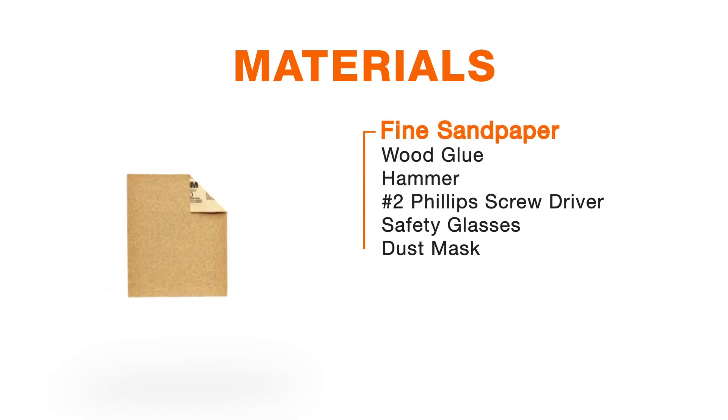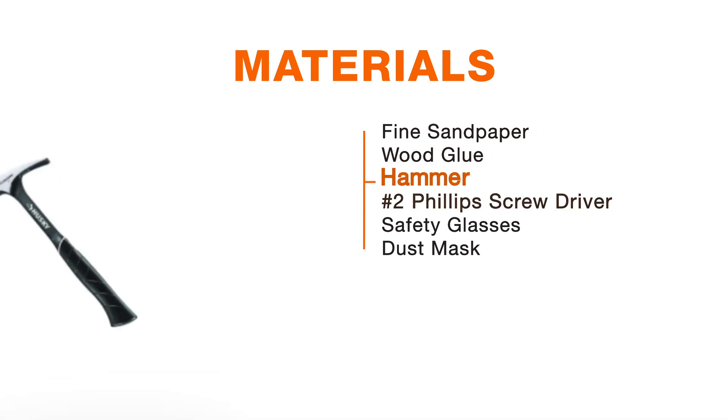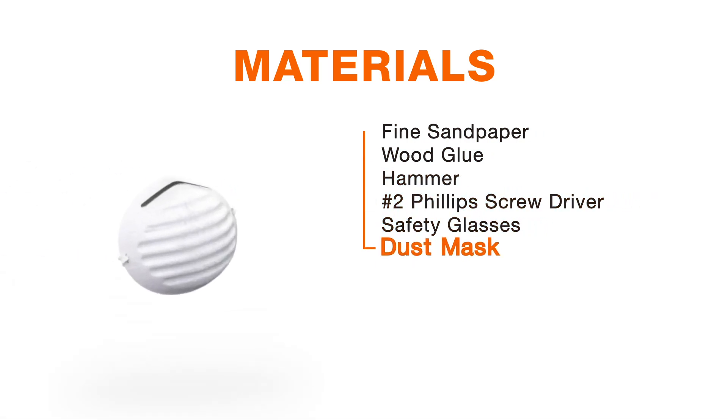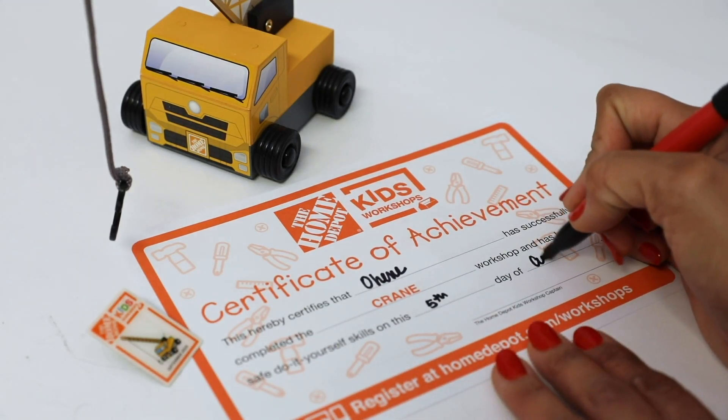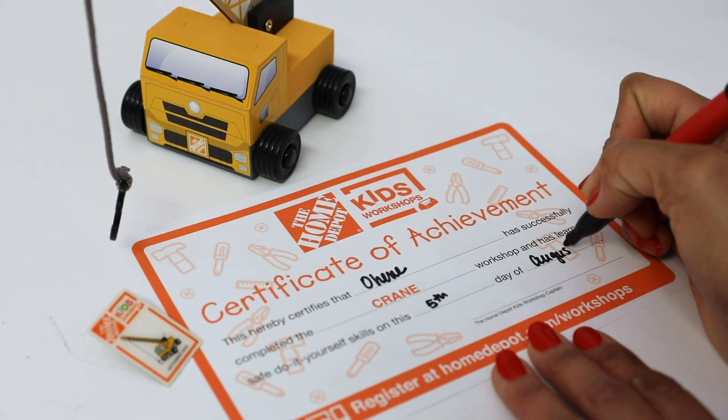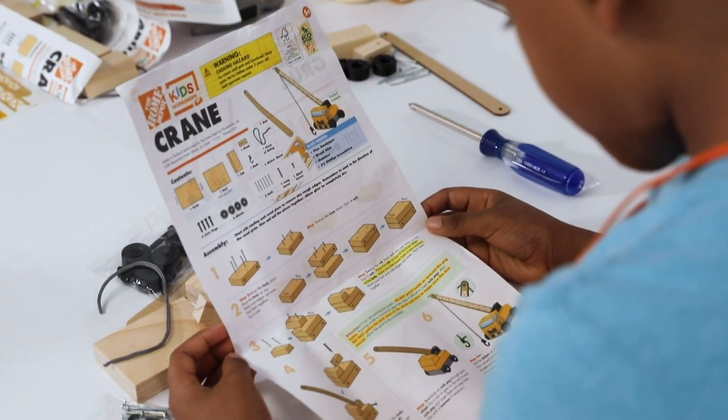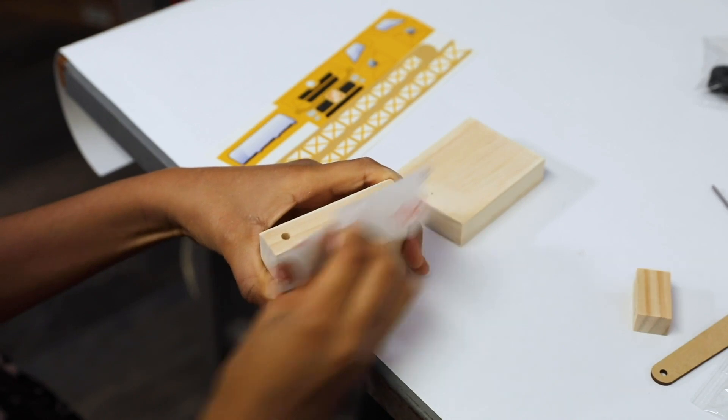You'll also need fine sandpaper, wood glue, a hammer and a number two Phillips screwdriver. And remember you'll need safety glasses and a dust mask. Now this kit comes with the kids own personal smock and they get a certificate of achievement and a pin. What's great is that the instructions are simple enough for even a five-year-old to understand.